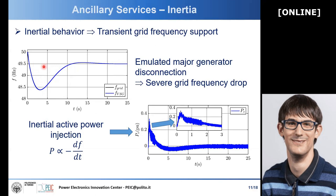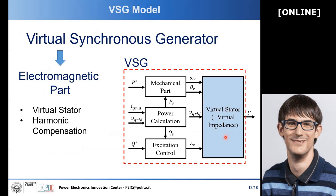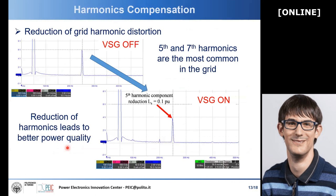The next block is the virtual stator, or virtual inductive impedance, which is basically in charge of harmonic compensation. It means that, for example, if we have harmonic content — such as a fifth harmonic, which is very common in the grid — when we switch on the virtual synchronous generator, we can reduce this harmonic distortion and obtain better power quality. Moreover, since this is a virtual impedance, we can tune the parameters and adjust the amount of harmonic compensation by changing the virtual inductance of this virtual machine.